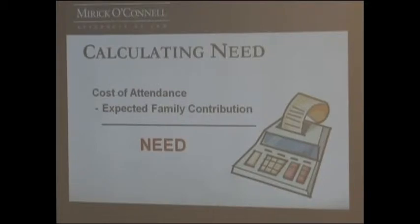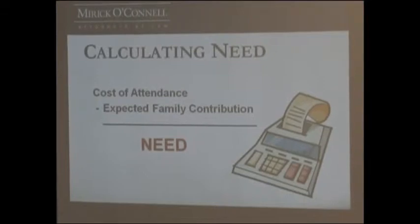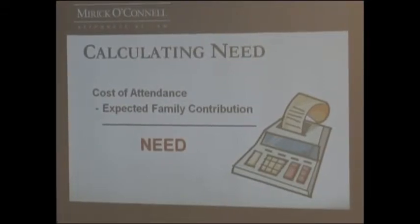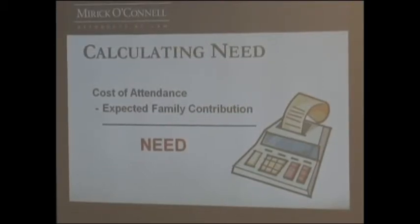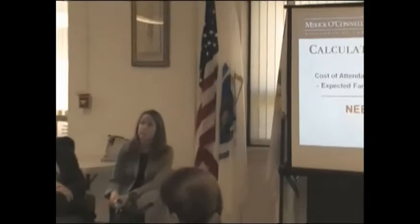What the financial aid offices do is they get the output information from the FAFSA, which includes the expected family contribution. They also by federal regulation have to come up with a cost of attendance, which is a budget based on the different student populations they have on campus. They break it down between independent and dependent students, often between graduate school programs and undergraduates, and even within that based on certain majors.